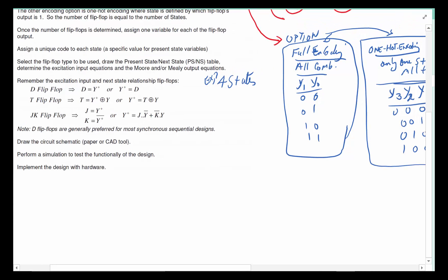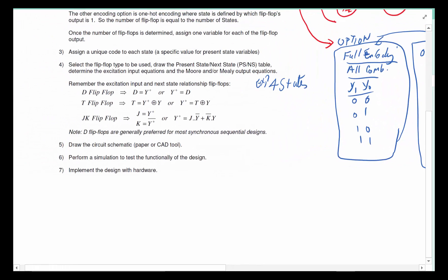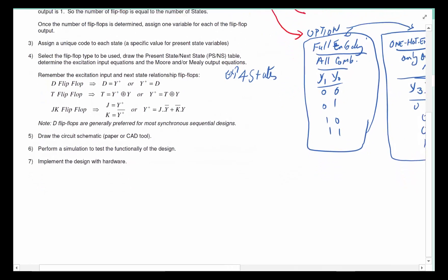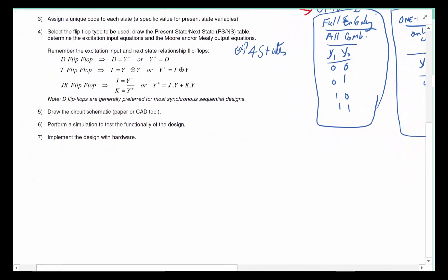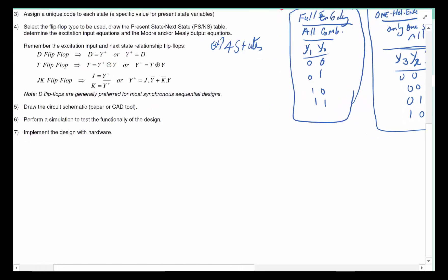Now you have the number of flip-flops. If I'm going full encoding for this example I need two; if I go one-hot encoding I need four. But I still have not made the determination which type of flip-flop do I want to use.